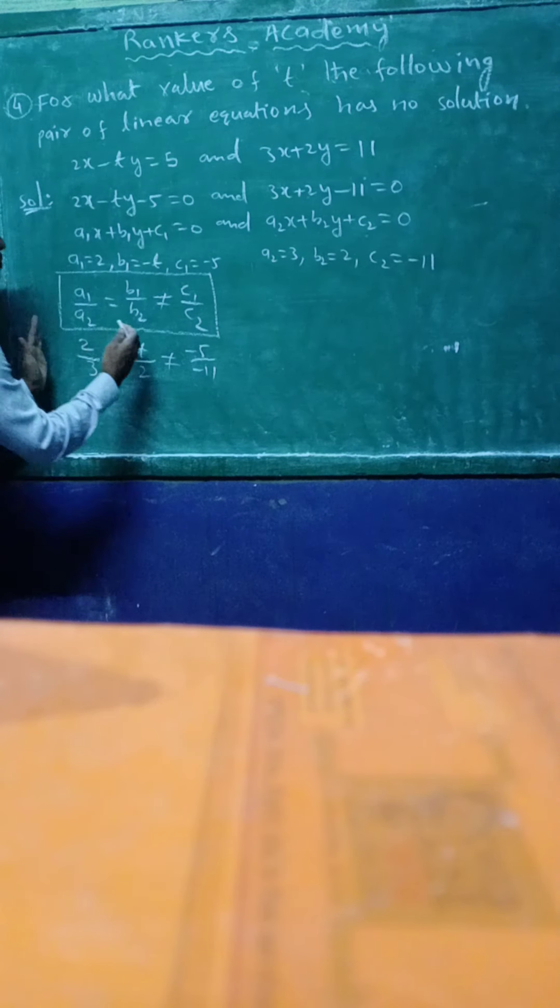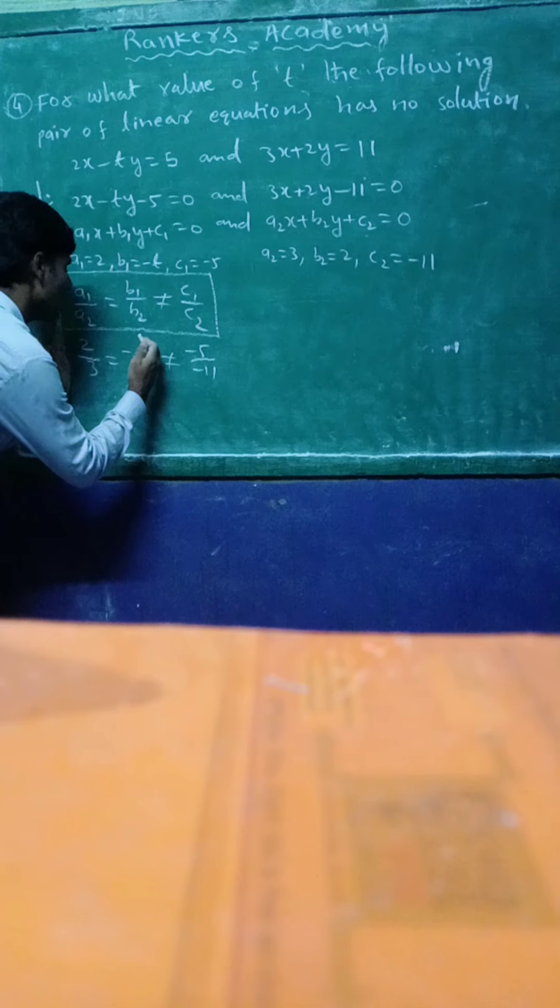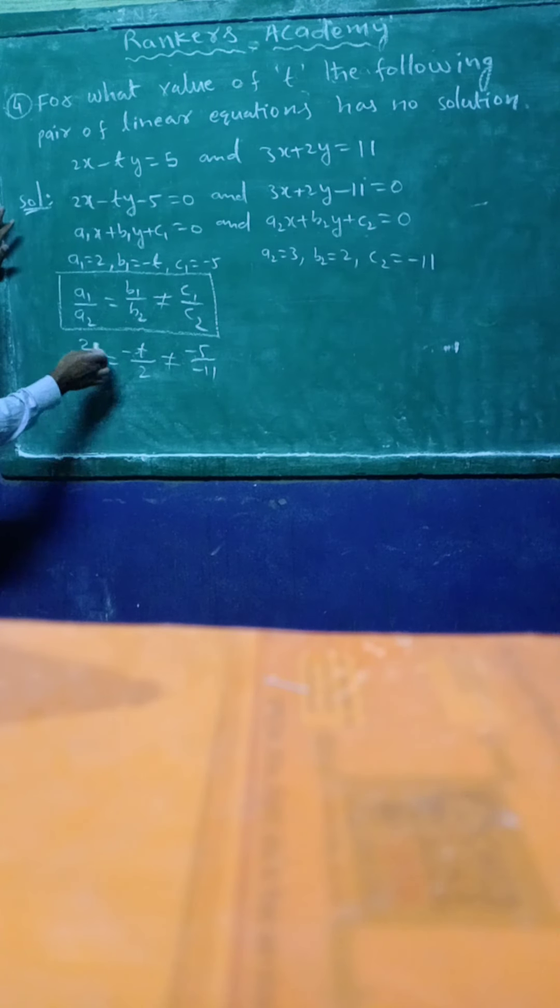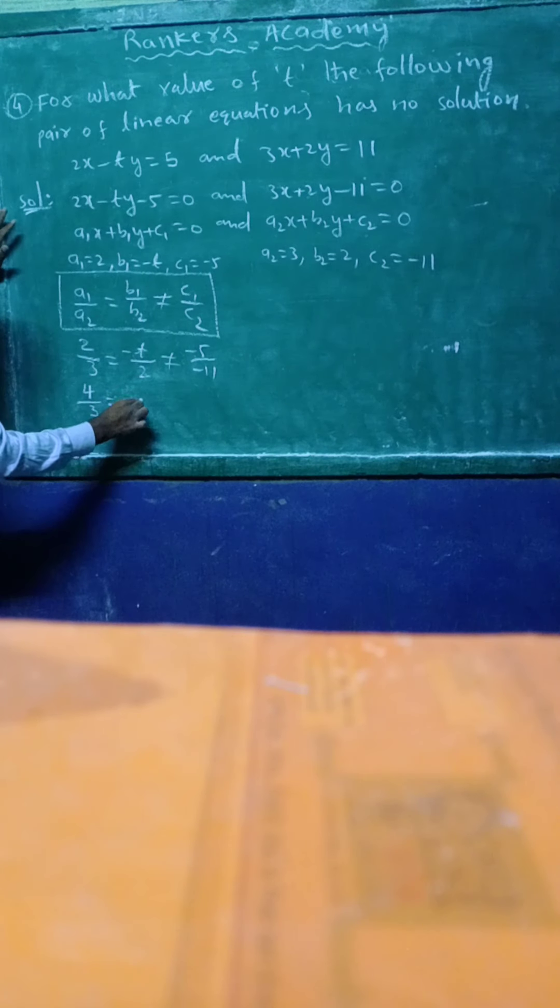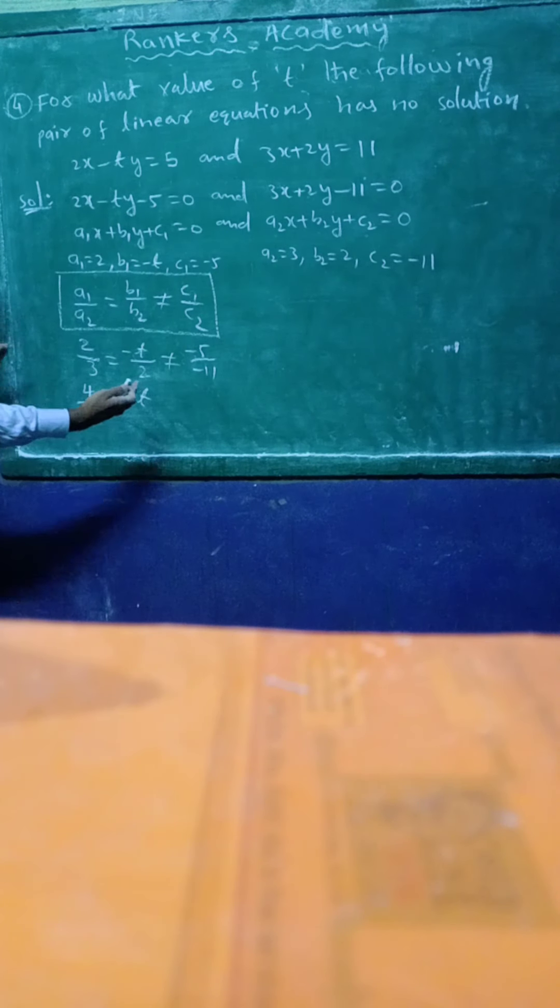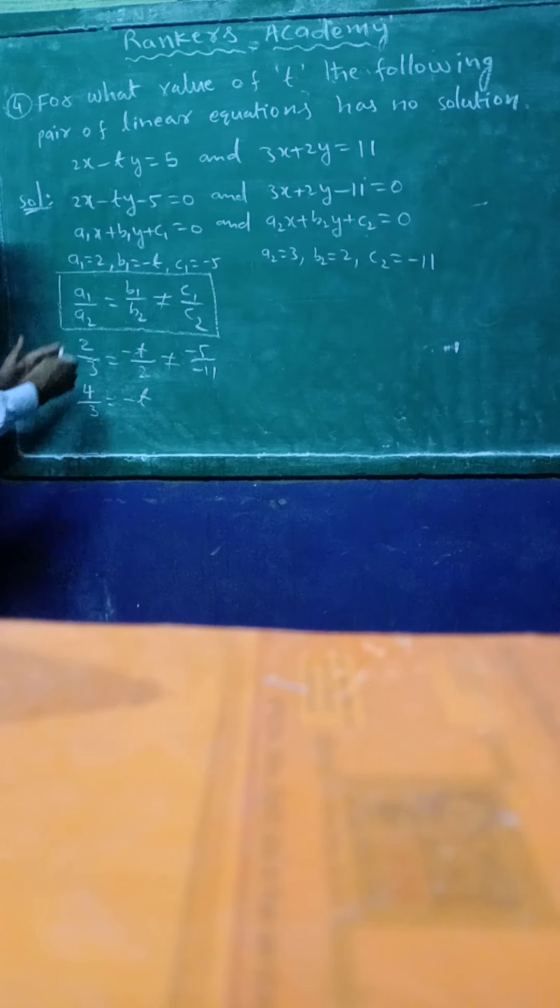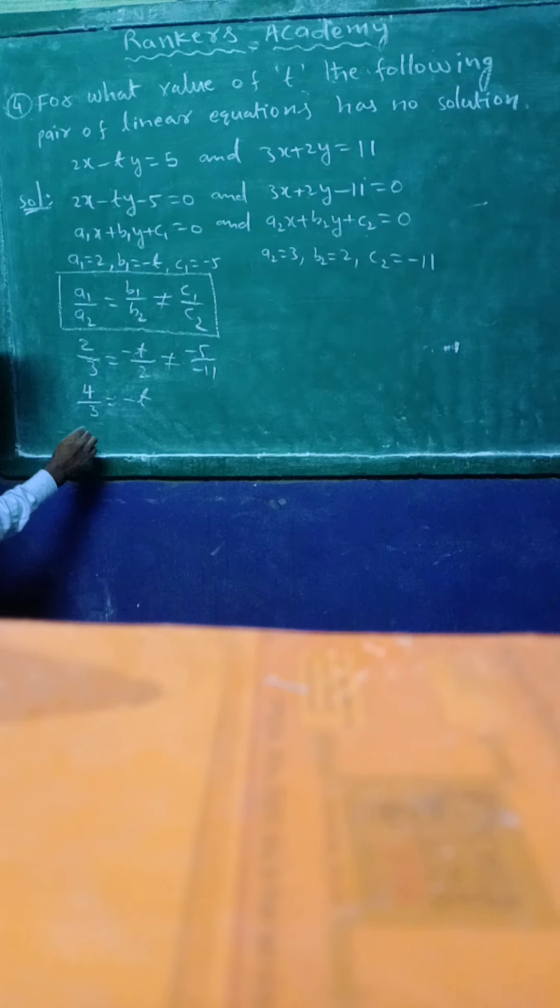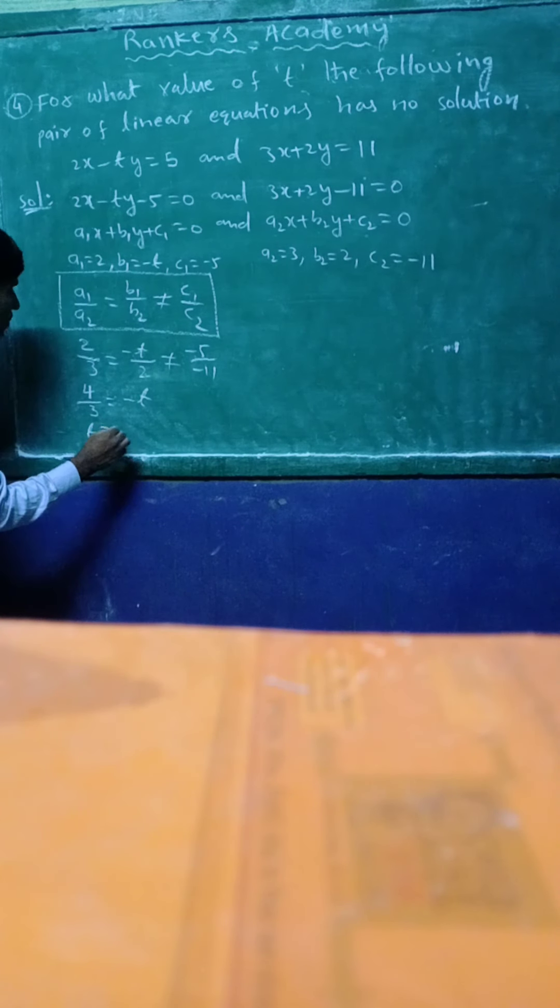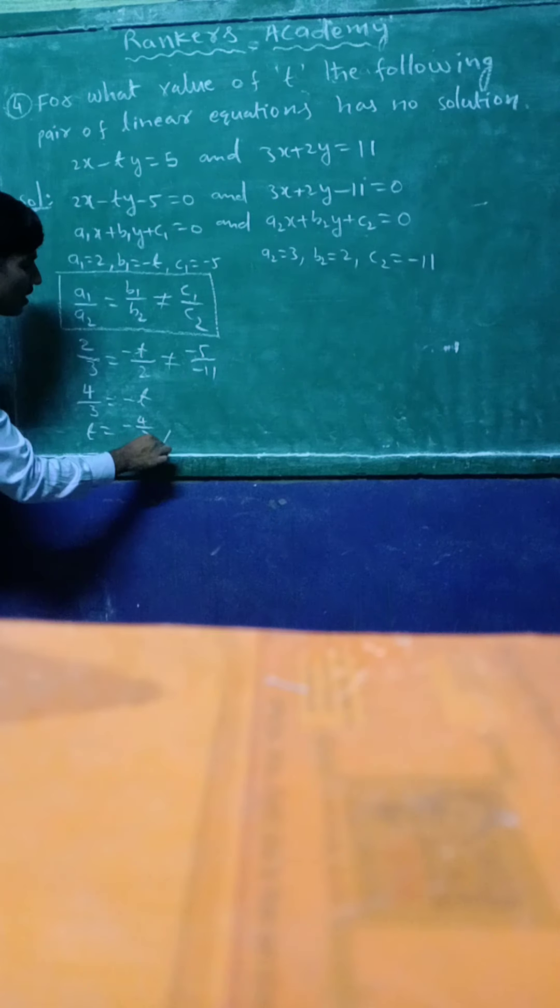Up to this only, we find t value. Cross multiplication: 2 times 2 equals 4. 3 times minus t. So 4 equals 3 times minus t. Minus t becomes plus t when transferred. 4 divided by 3, so t equal to minus 4 by 3. That is the answer.